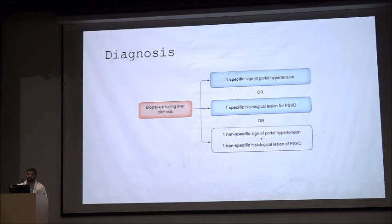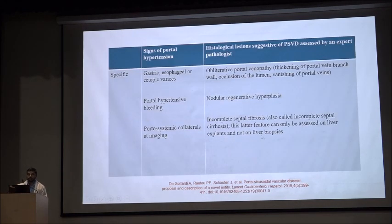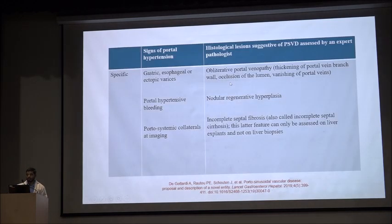This diagnosis requires biopsy-proven exclusion of cirrhosis, along with one specific sign of portal hypertension or one specific histological sign of portal hypertension, or non-specific clinical signs along with non-specific histological signs. Specific histological signs include obliterative portal venopathy with thickening and occlusion of the portal vein lumen, nodular regenerative hyperplasia, and incomplete septal cirrhosis.